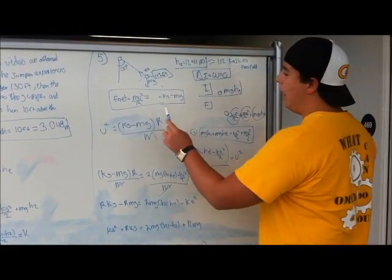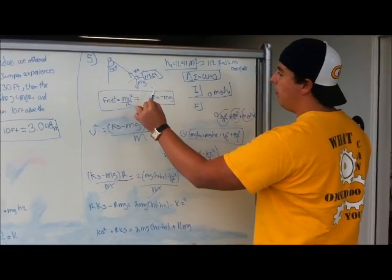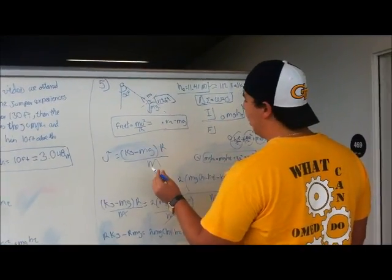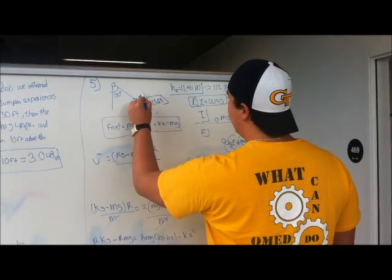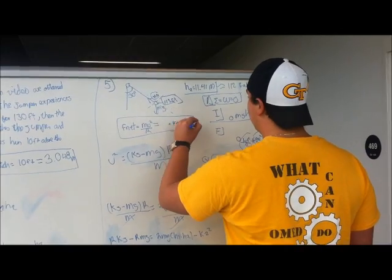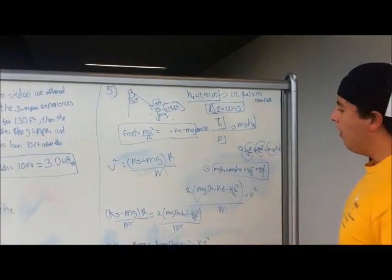After that, we know that we are going to analyze the free body diagram. We know that there are two forces acting. It's going to be the spring force and the gravity force at an angle that is cosine 30 degrees.